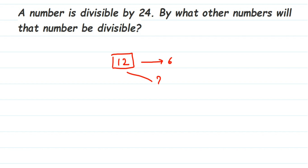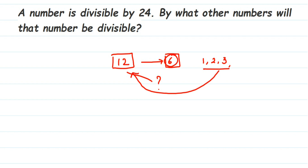Now, 12 is divisible by 6 — by which all other numbers is 12 also divisible? To get the answer we use 6. We find the factors of 6 — which numbers divide 6. So 6 is divisible by 1, 2, 3, and 6 itself. These are the factors of 6, and we know that 1, 2, and 3 can also divide 12.